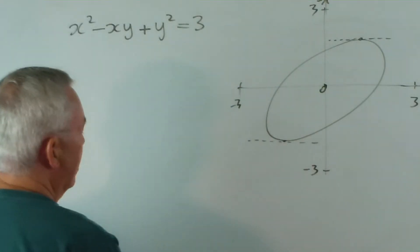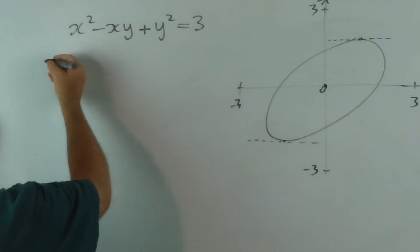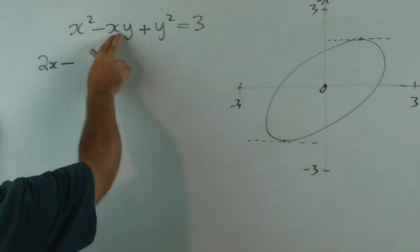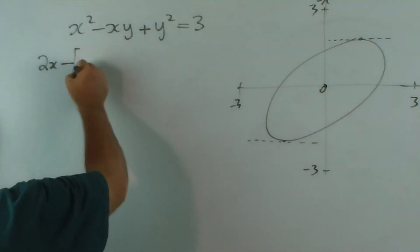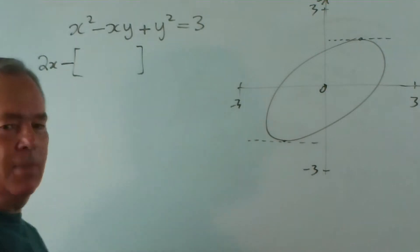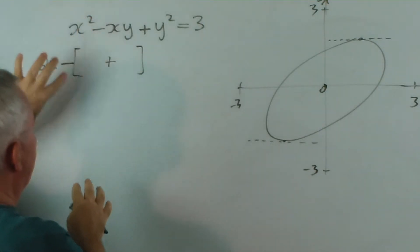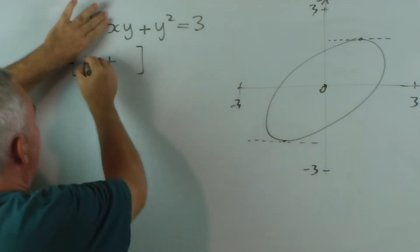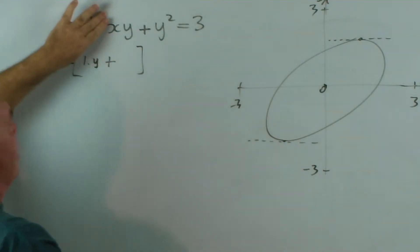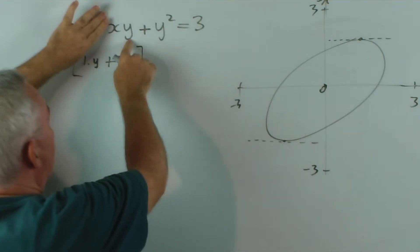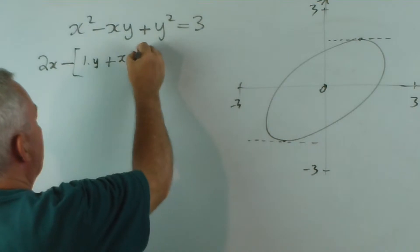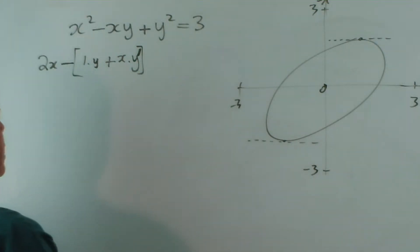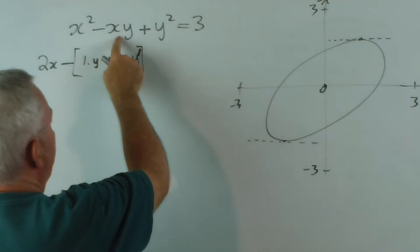Taking the derivative of both sides with respect to x: the derivative of x squared is 2x — that's easy — minus... here we have a product, so there'll be two terms. I'm going to leave a negative sign out the front. The derivative of x is 1, so 1 times y will be the first term. Then, leaving the x alone, we find the derivative of y with respect to x, which is y dash. Don't forget: every time a y appears, you're going to get a y dash — a derivative of y with respect to x. That takes care of that product, x times y.